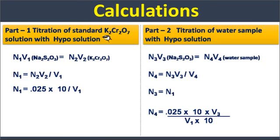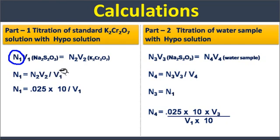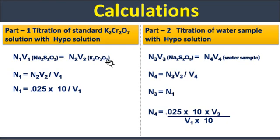Calculations Part 1 — titration of standard potassium dichromate solution with hypo solution. Using the normality equation N₁V₁ = N₂V₂, we determine the exact normality of the hypo solution: N₁ = N₂V₂ / V₁, where N₁ is the normality of hypo solution, V₁ is the volume of hypo solution used, N₂ is the normality of potassium dichromate (0.025 N), and V₂ is the volume of potassium dichromate (10 ml).